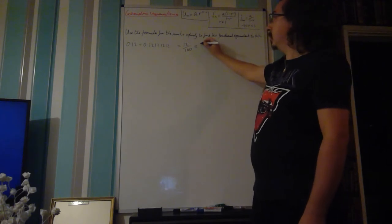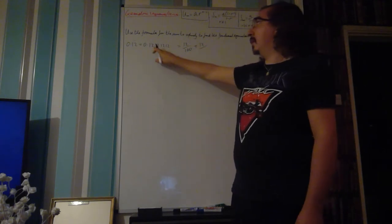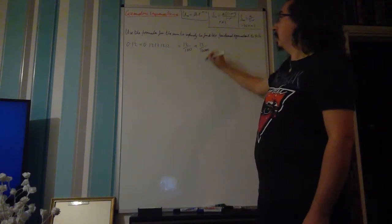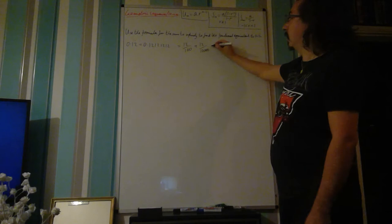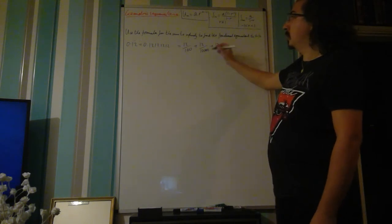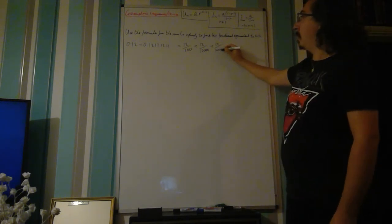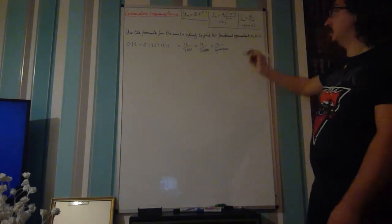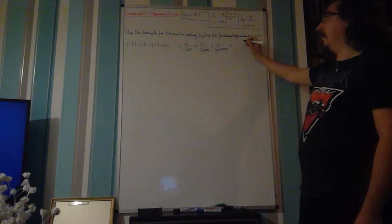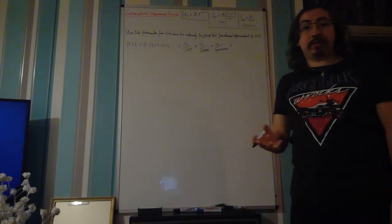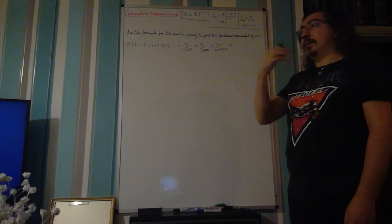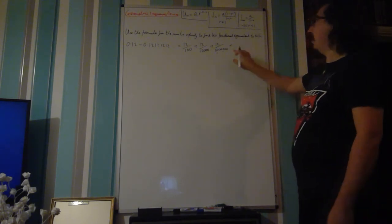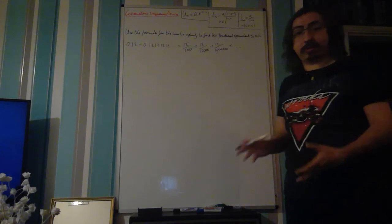Plus 12 divided by 10,000, so 12 ten thousandths, plus 12 over 1,000,000, the millionths, and so on. 12 over 100 million, and 12 over 10 billion, and so on. It carries on forever, it's a recurring decimal.